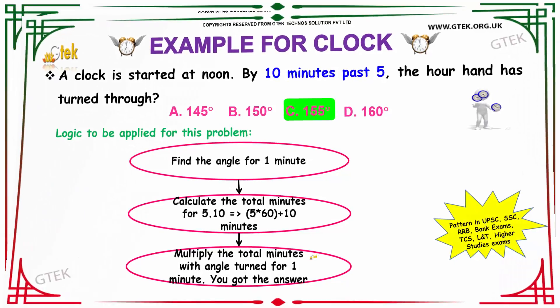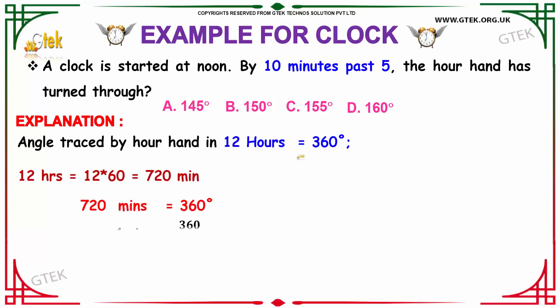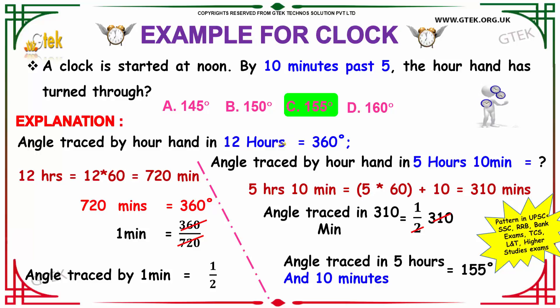Let us see how to apply this logic. The angle traced by a hour hand in 12 hours will be 360 degrees. So in 12 hours, you have to calculate the number of minutes. Total number of minutes in 12 hours will be 12 into 60, that is 720 minutes. In 720 minutes, your hour hand rotates for about 360 degrees. So in 1 minute, how much will be the angle? That is 360 divided by 720, it is nothing but half. The angle traced by a hour hand in 1 minute will be half.